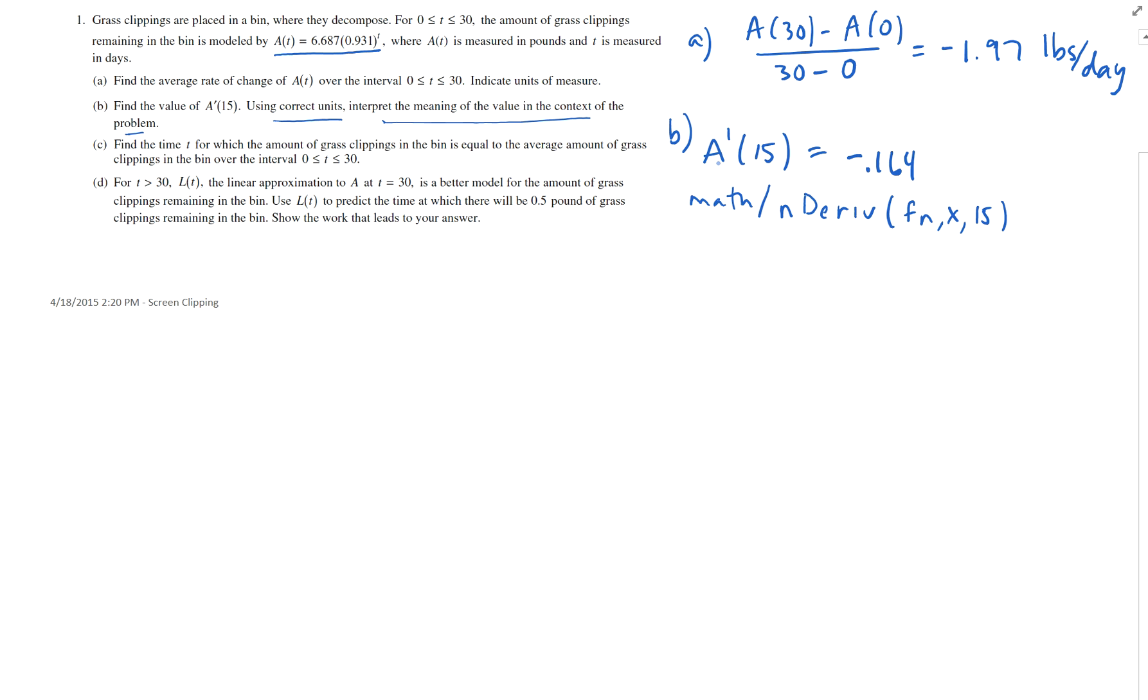So what is A prime of 15? That's the rate of change of A, which is the amount of grass clippings in the bin when t is 15. So it's going to be, and what's happening to the amount of grass clippings, the rate of change is negative 1.64 pounds. So the amount of grass clippings is decreasing by 0.164 pounds per day when t equals 15 days.